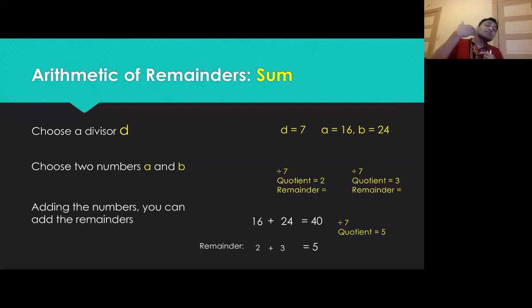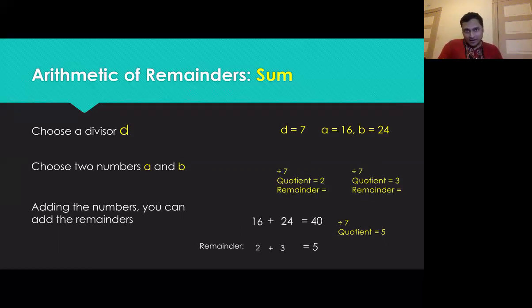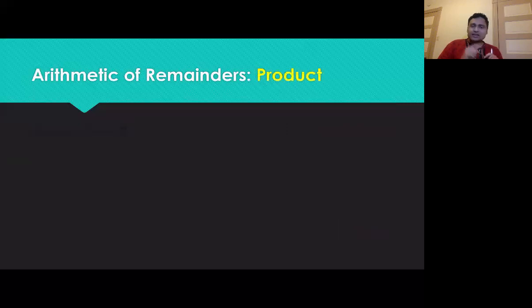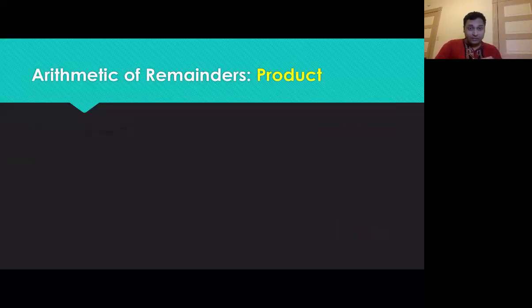If the sum of the remainders exceeds the divisor, you may need to divide again by the divisor. There is a separate video for this. Now let's talk about the product rule for the arithmetic of remainders.